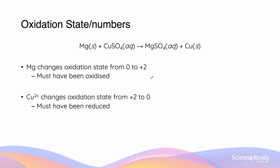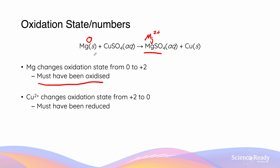Let's look at examples of how we can use oxidation state or numbers to work out which species have been reduced and which have been oxidized. Magnesium originally has an oxidation state of zero. However, in this compound it has become Mg²⁺ and therefore has an oxidation state of +2. Since it has increased from zero to +2, it must have been oxidized and therefore magnesium must be the reductant. The same occurs for Cu: Cu originally is Cu²⁺, but it turns into Cu with a neutral charge and therefore an oxidation state of zero. Since the oxidation state has decreased from +2 to zero, it must have been reduced and is itself the oxidant.